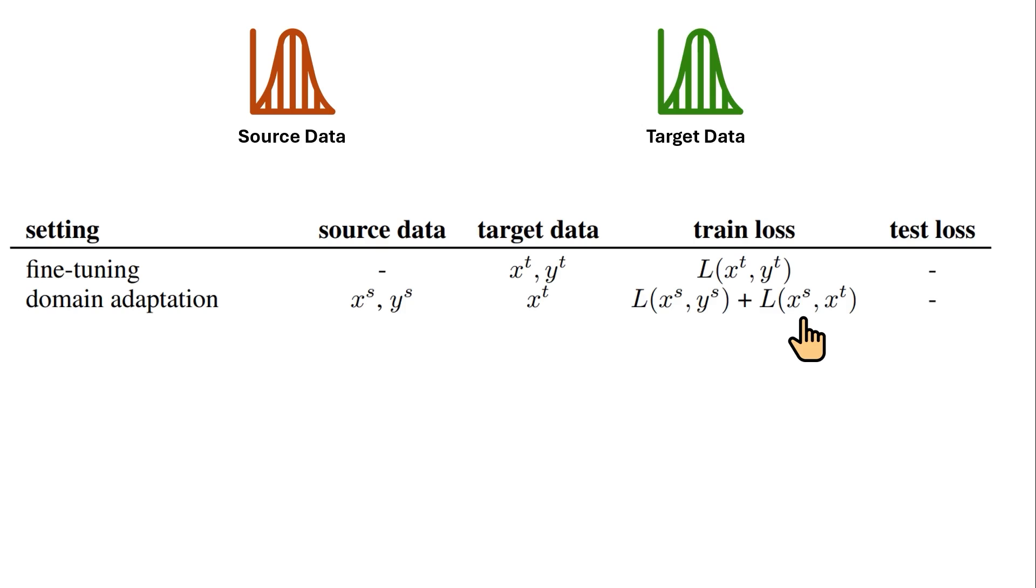But anyway that's the domain adaptation. There are some scenarios that we train the model and then we implement it and at the test time we see that the performance sometimes becomes worse and we want our model to continuously adapt itself to the new environment and makes itself better and better and that is test time training. In test time training we have some source data and a target data. For the target data we don't have any label because that's actually happening at inference time and the thing that they do is that at the test time they add another loss function that only considers the input that it's seeing at the inference time.